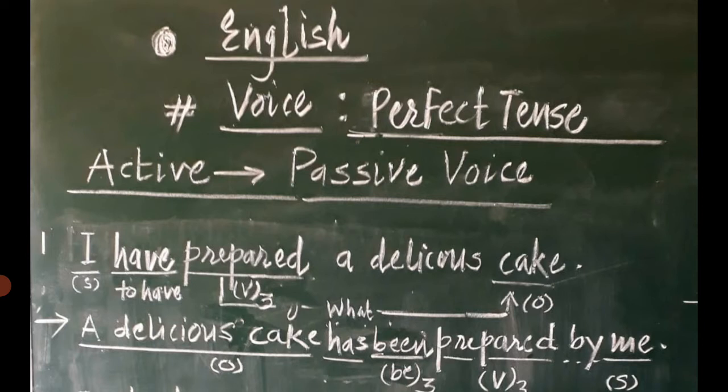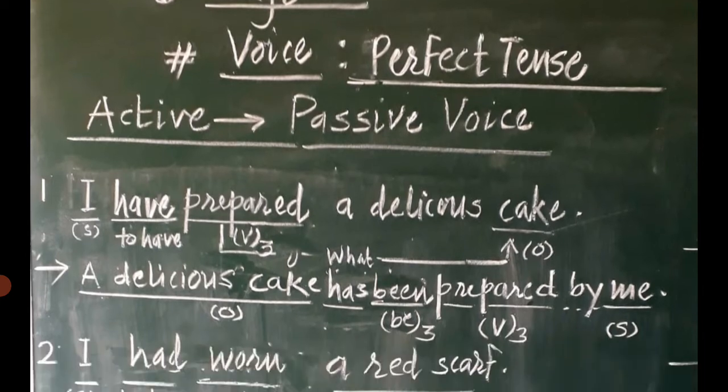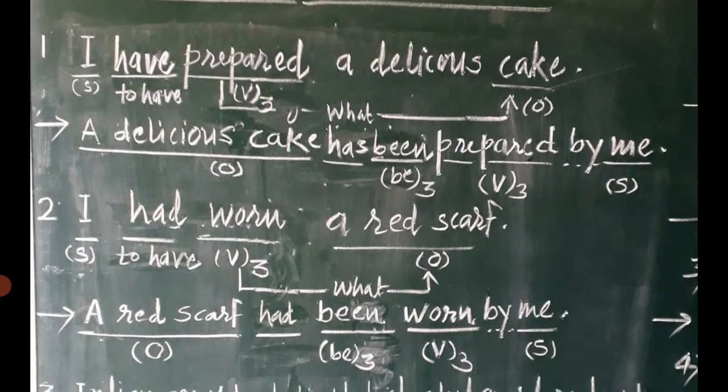I hope everybody has a very clear idea about the perfect tense. Here is an example: 'I have prepared a delicious cake.' In this sentence, after the subject, there is 'have' as a representative of 'to have.' Afterwards, 'prepared' is an action verb in past participle form — prepare, prepared. So, to have plus past participle of an action verb is the structure of perfect tense.